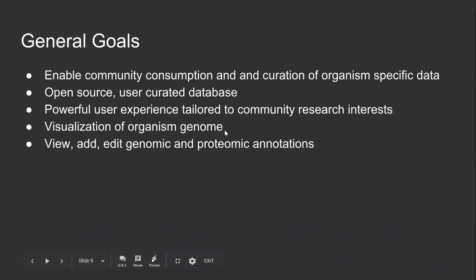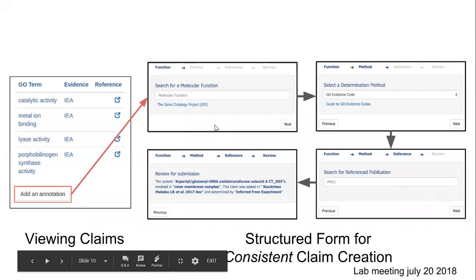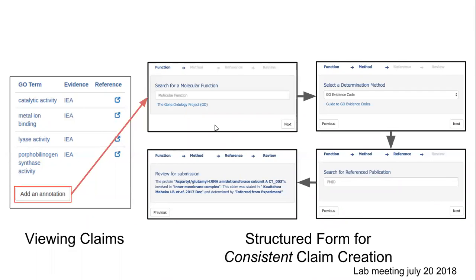The goals of Wikigenomes and PlanBase are simple: to encourage mass genomic and proteomic annotation by the research community at large. Not only do these applications allow users to view data, but they also allow users to add and edit knowledge as well. These websites ultimately fall in the domain of crowdsourced biology, the mass curation of biological data by the entire community. Here is an example of an annotation wizard that guides the user through the curation process. This illustration shows the curation of a molecular function GO term, prompting the user to enter the name, determination method, and PubMed ID, where the data is then checked and written to the backend.